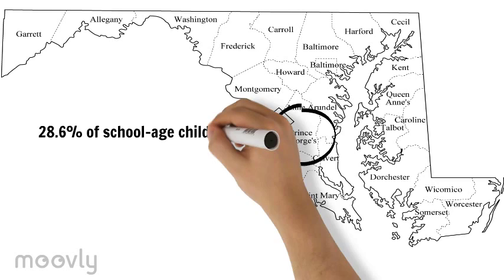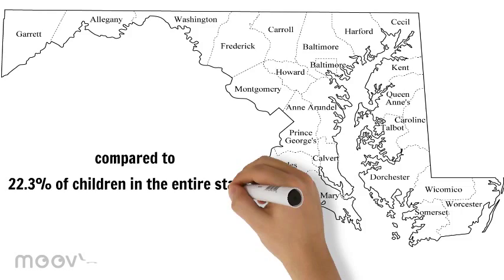In Prince George's County, 28.6 percent of school-aged children are obese compared to the 22.3 percent for the state of Maryland. This is why we decided to focus on this specific county.